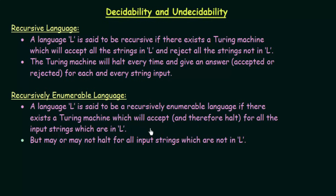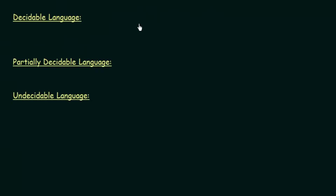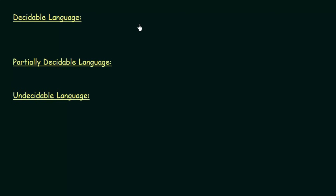The key difference between recursive and recursively enumerable languages is that for recursive languages the Turing machine will always halt — either accept and halt, or reject and halt. But for recursively enumerable languages, the Turing machine will halt only when it is accepting a string in the language; in other cases it may not halt. By understanding these two language types, we can now define decidable, partially decidable, and undecidable languages.